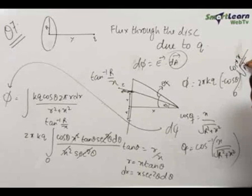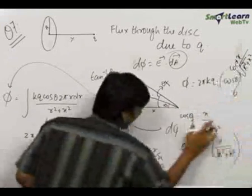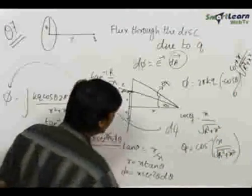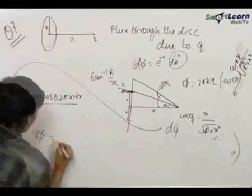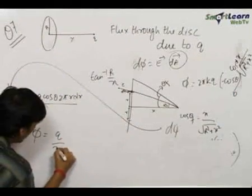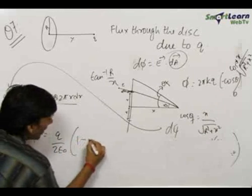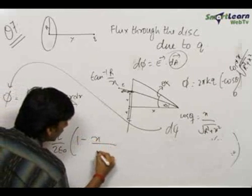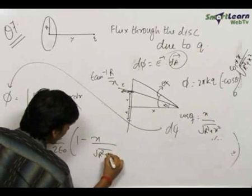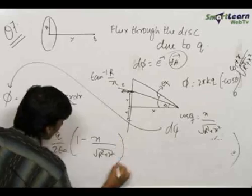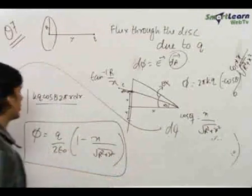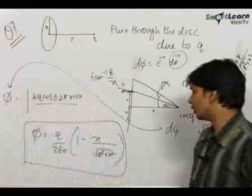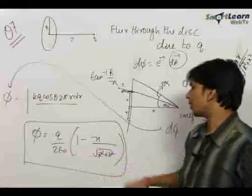Substituting the limits into −cosθ and simplifying, the final flux is: φ = q/(2ε₀) · (1 − x/√(R² + x²)). This is the final answer for the electric flux through the disk.